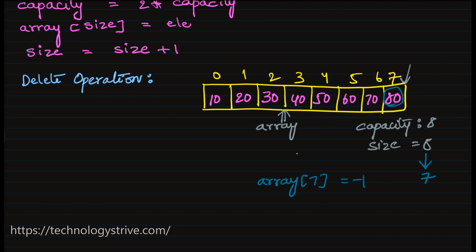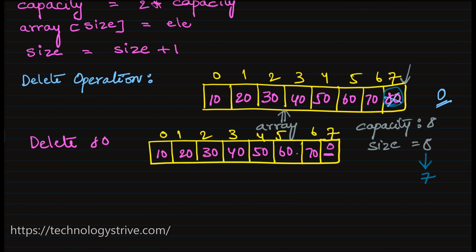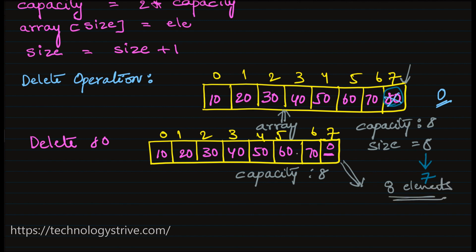Whatever memory was allocated for this array remains the same even though we have deleted an element — the memory will not change because it is static in nature. When we initialize the array, it is static in nature, so the memory occupied by this array doesn't change. We just update it to some default value, here I have given minus 1, or else it will be 0. After deleting 80, the capacity is still 8 because memory for 8 elements is still allocated. The size has decreased from 8 to 7.